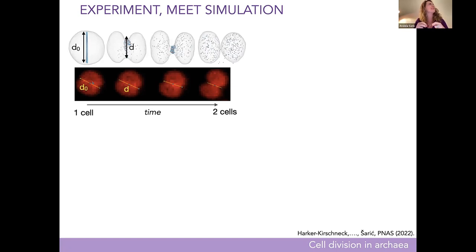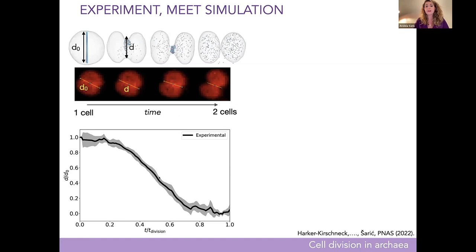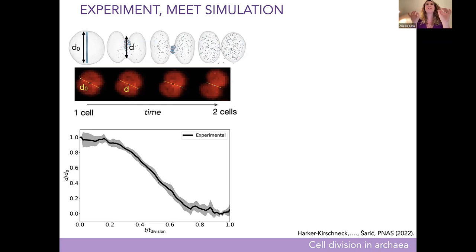The main value of this exercise is that we can now compare to live cell data. We got a bunch of cells from Buzz, and as physicists we quickly learned that living organisms have different sizes and different division times. But if we measure the neck as cells divide, scale it by initial cell size, and scale time by the division time, all the experimental data from several tens of cells with different dyes and fixation conditions fall onto the same curve. For physicists, this is as good as it gets. We then looked for a protocol of curvature change that reproduces this curve.